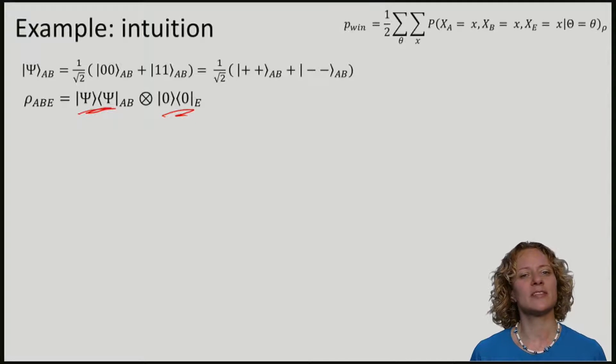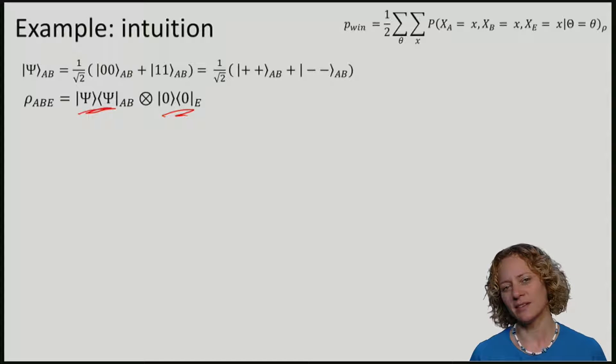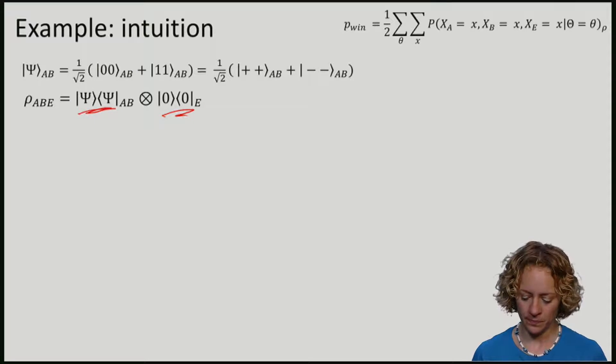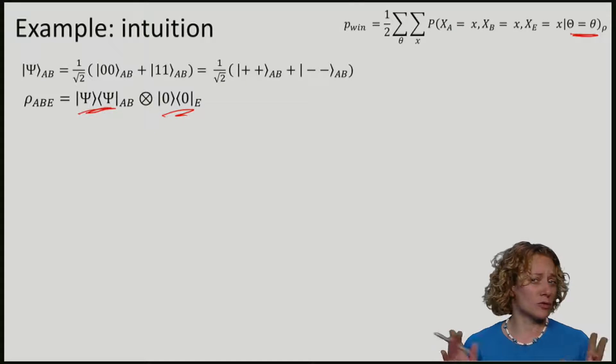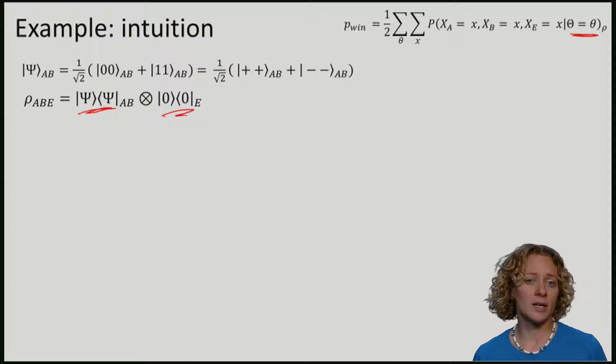Remember that Alice will always measure in the standard basis or in the Hadamard basis depending on zeta. I will now say that Bob also always measures in the standard or in the Hadamard basis to get some intuition.